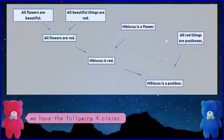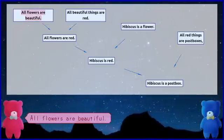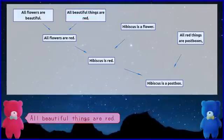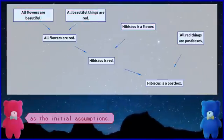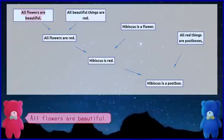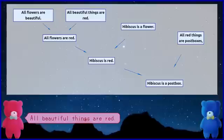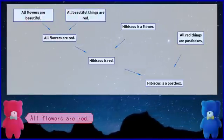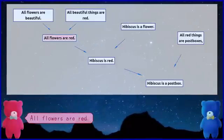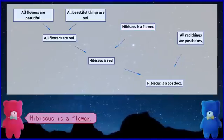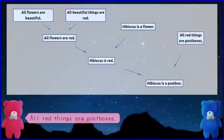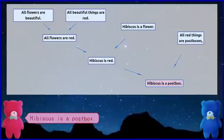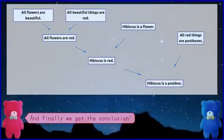In this diagram, we have the following four claims as the initial assumptions: All flowers are beautiful. All beautiful things are red. Hibiscus is a flower. All red things are postboxes. From 'All flowers are beautiful' and 'All beautiful things are red,' we can derive: All flowers are red. From 'All flowers are red' and 'Hibiscus is a flower,' we can derive: Hibiscus is red. From 'Hibiscus is red' and 'All red things are postboxes,' we can derive: Hibiscus is a postbox. And finally, we get the conclusion: Hibiscus is a postbox.